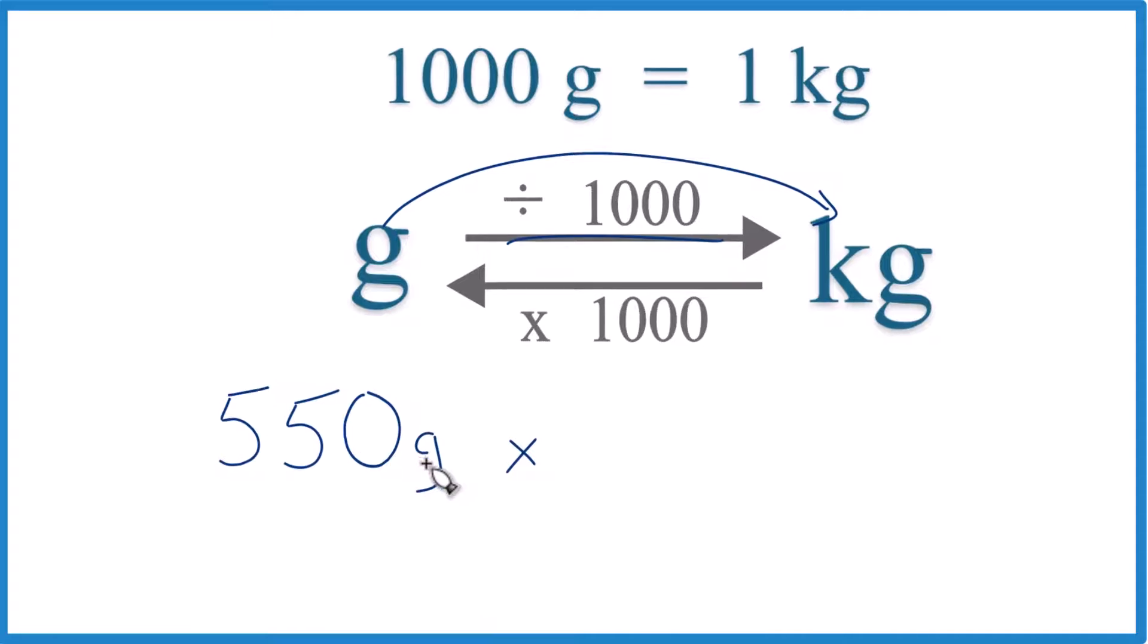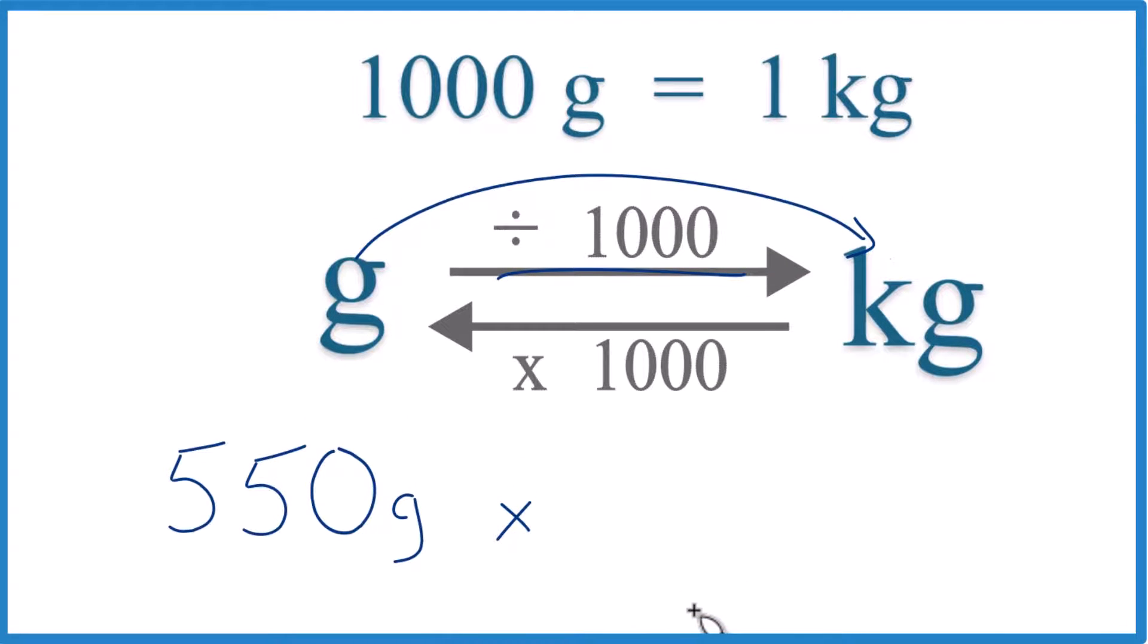We have grams on top, we want grams on the bottom so they cancel out, leaving us with kilograms. So we'll use this conversion factor here. Again, 1 kilogram is 1,000 grams.